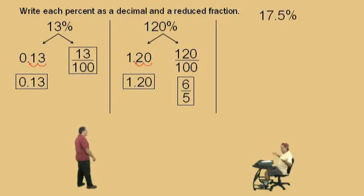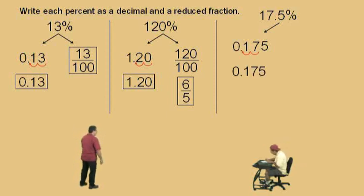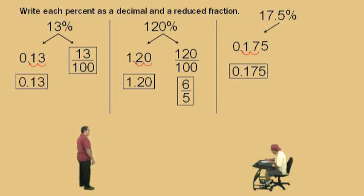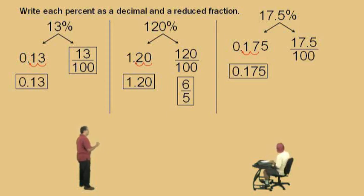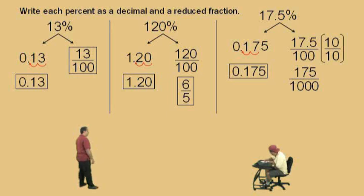Now here we go — 17.5%. To write it as a decimal, move the decimal which way? That's right, and we end up with 0.175. Very nice there, Charlie. Now to write it as a fraction — notice, Charlie, we put 17.5 over 100. Now that's not our answer. The first thing we have to do is clear that decimal by multiplying top and the bottom by 10. Because 17.5 times 10 becomes what, Charlie? 175. That's right, and 100 times 10 is 1000. And now with our calculator, we can divide top and the bottom by 25, and what do we get, Charlie? 7 over 40. Very nice there, Charlie, very good.